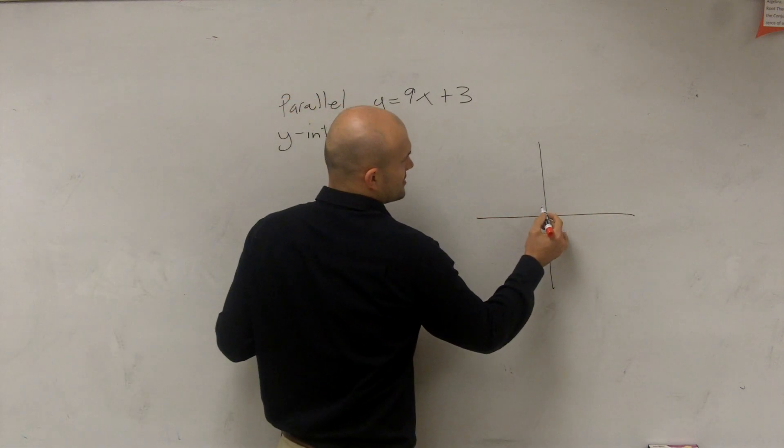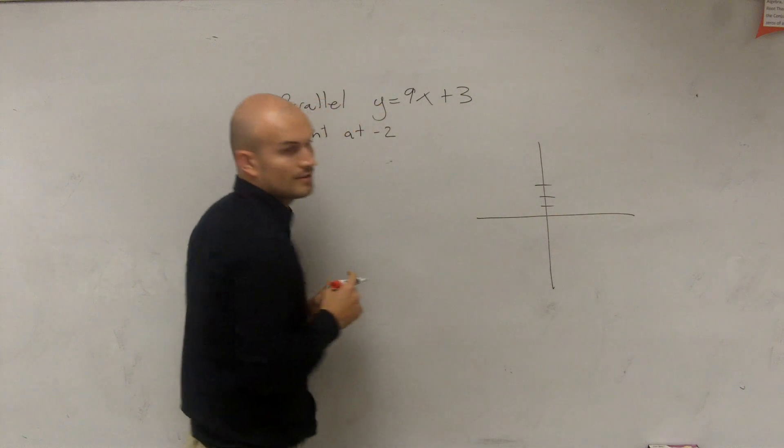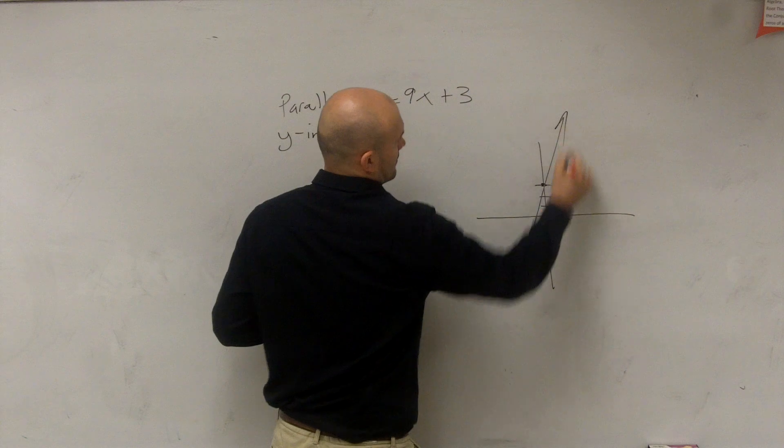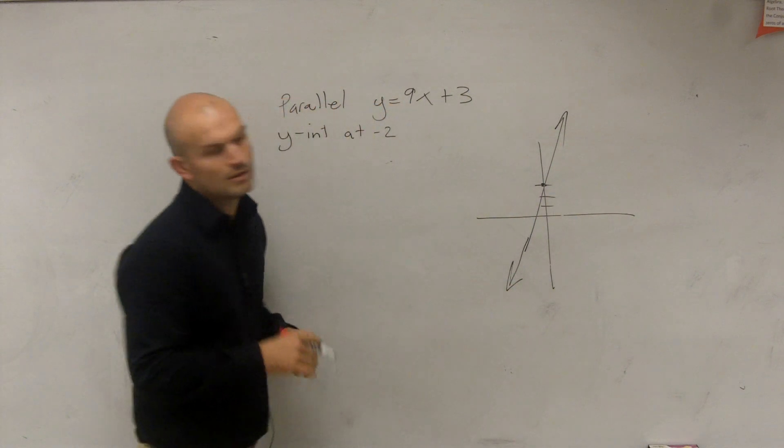So the y-intercept here is going to be 1, 2, 3. And the slope of this is going to be up 1 over 9, OK?